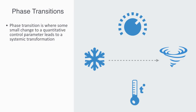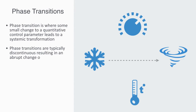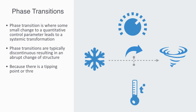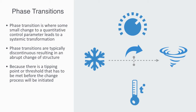Phase transitions are typically discontinuous. For example, a liquid may become gas upon heating to the boiling point, resulting in an abrupt change in volume. This discontinuous change is because there is a tipping point, or threshold, that has to be met before the change process will be initiated. It is not a continuous change, but a non-linear, abrupt change during which the system is in a state of disequilibrium.